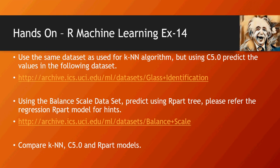Now you have the balanced scale dataset predictions using KNN, C5.0, and RPART — compare these models and see the pros and cons of each. I hope you enjoyed this series. There are a lot of other videos and components and sections coming up, so keep watching. Thank you.